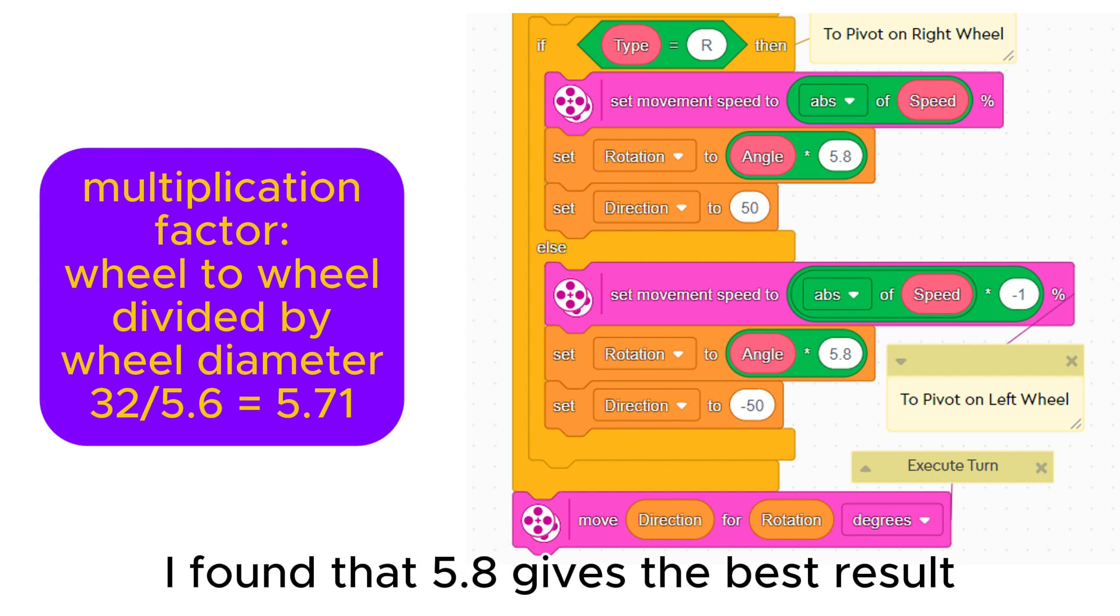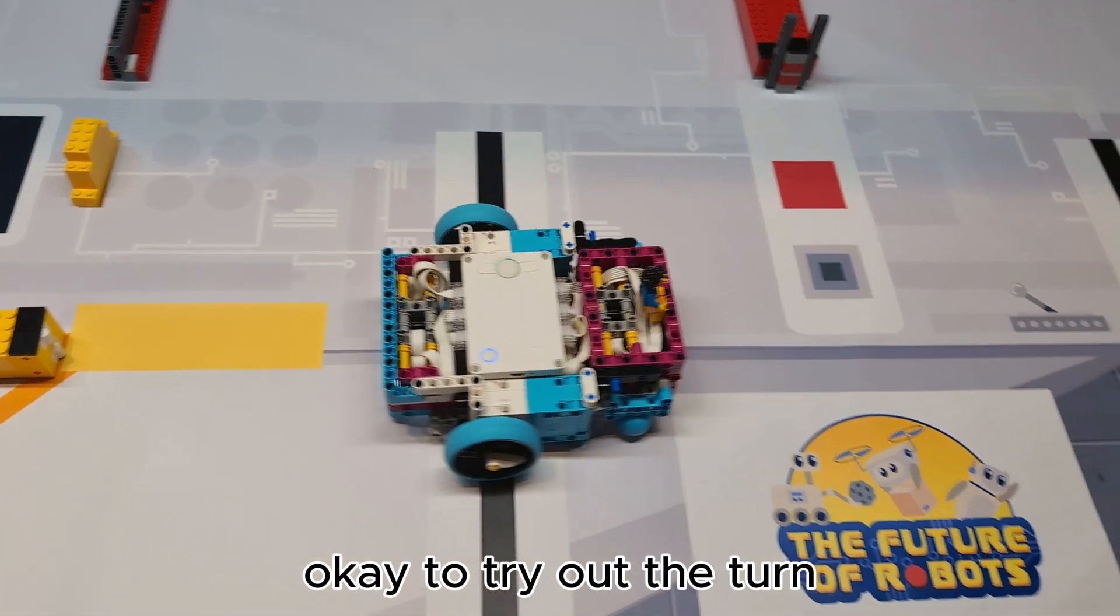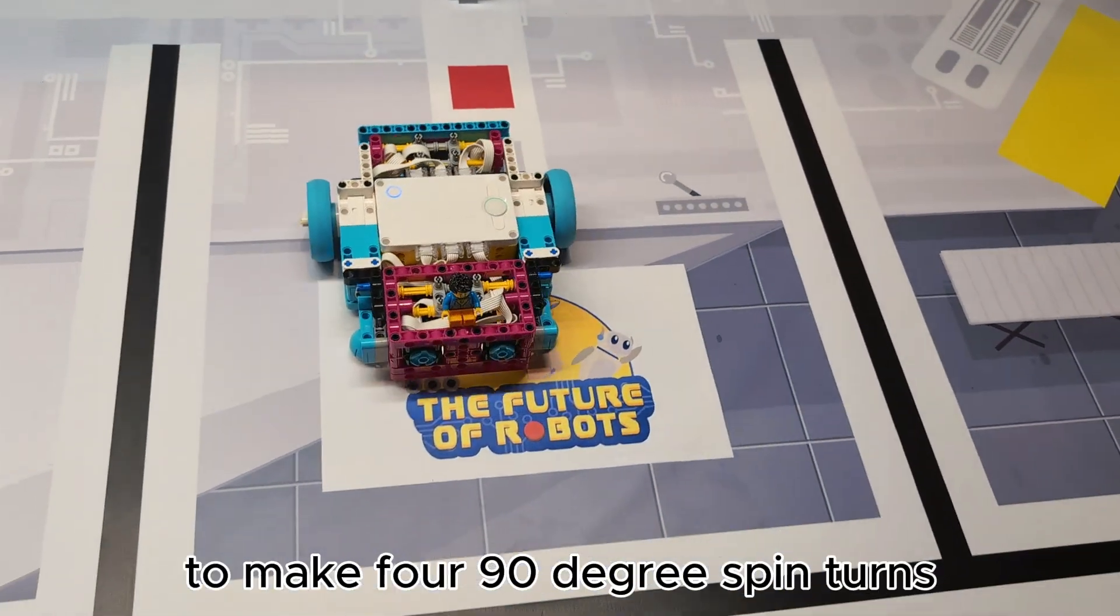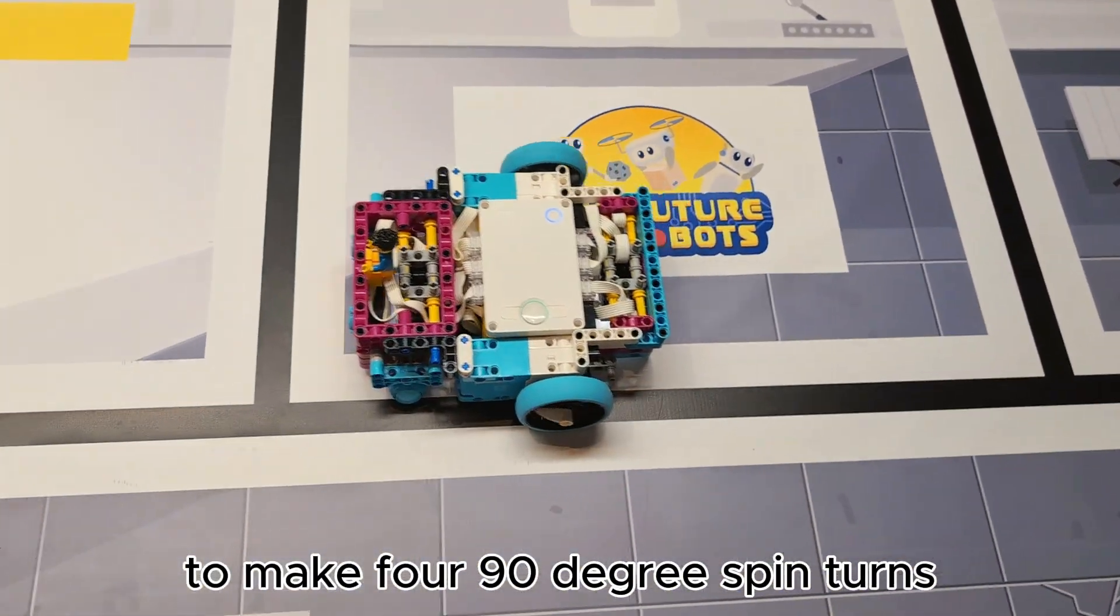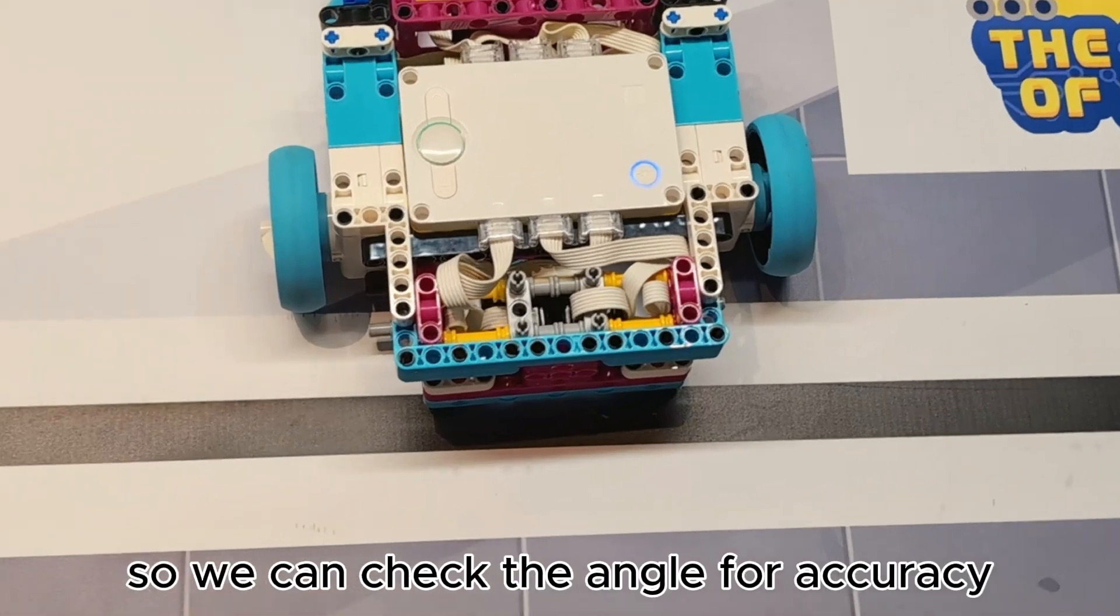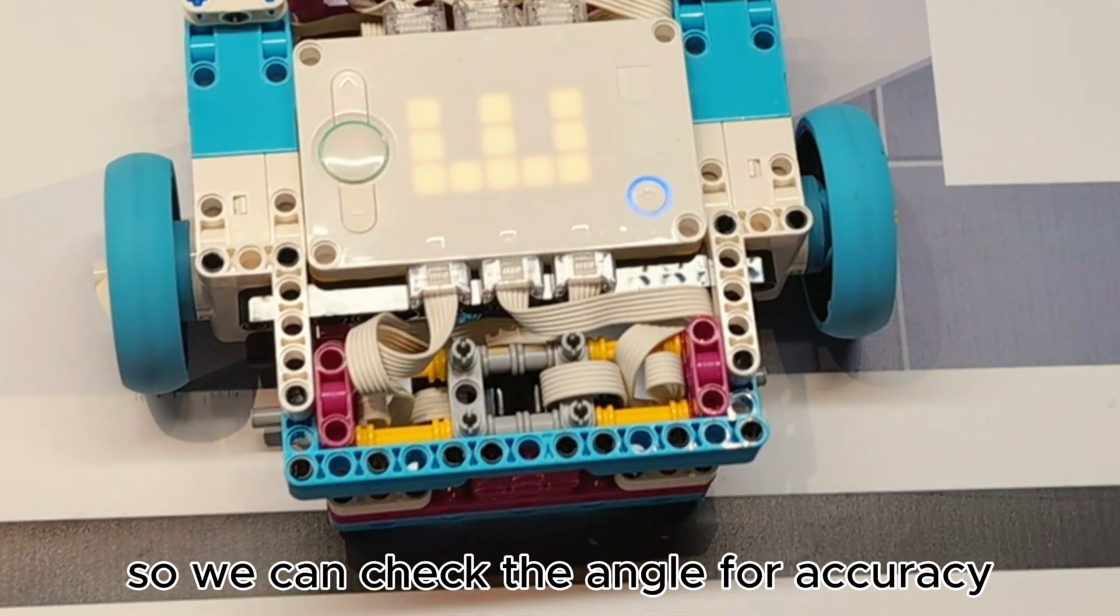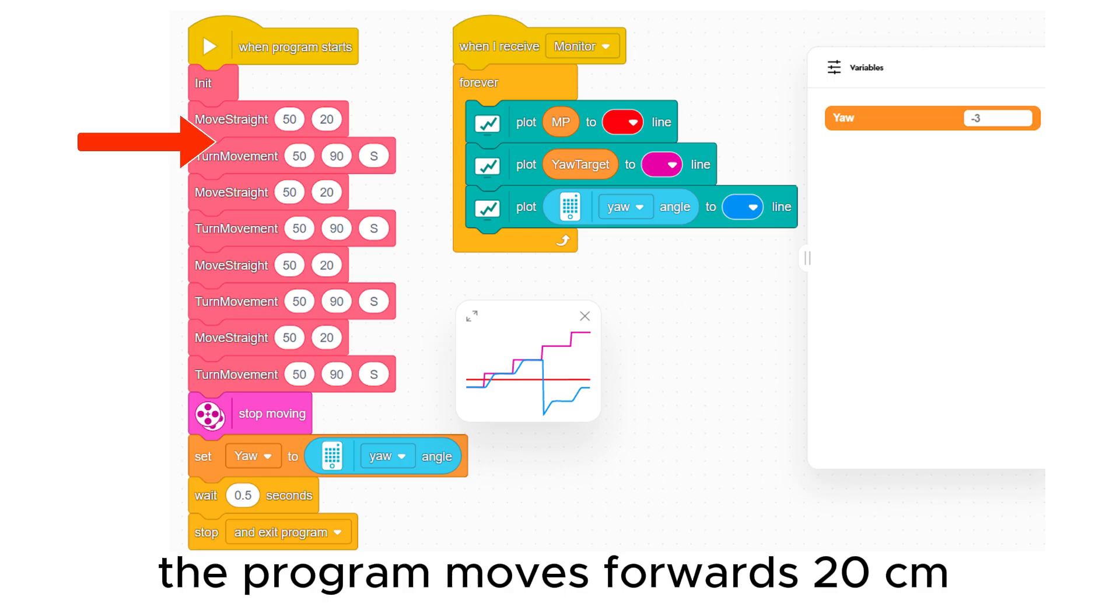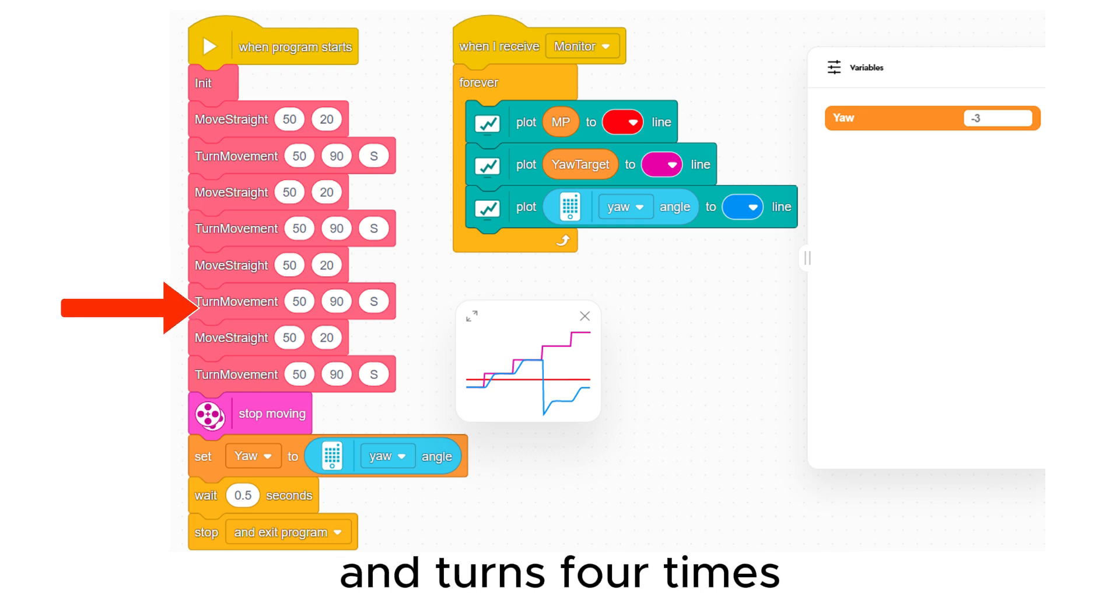Okay, to try out the turn, I have made a program to make 4 90-degree spin turns and end up where it started so we can check the angle for accuracy. The program moves forwards 20cm and turns 4 times.